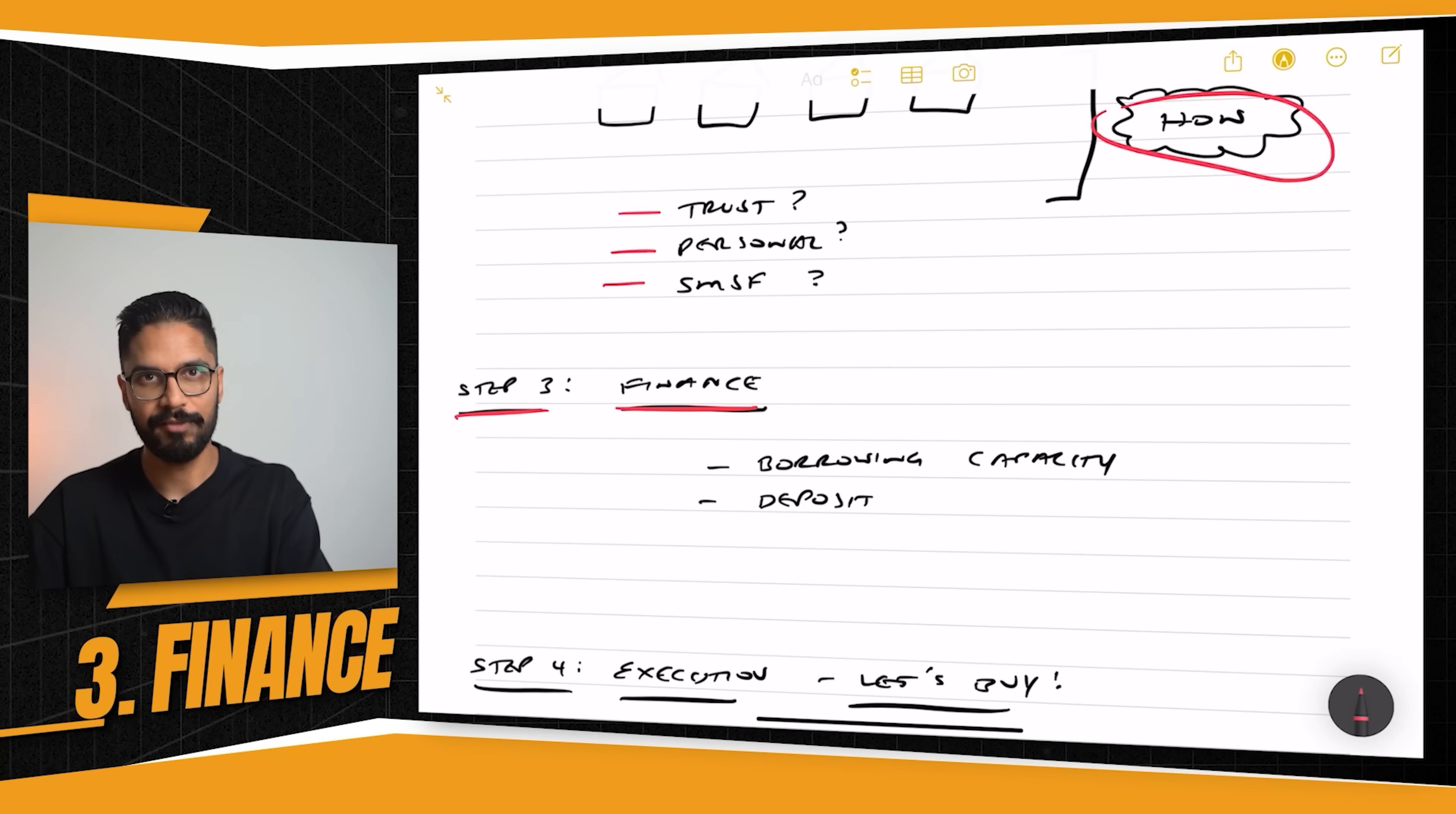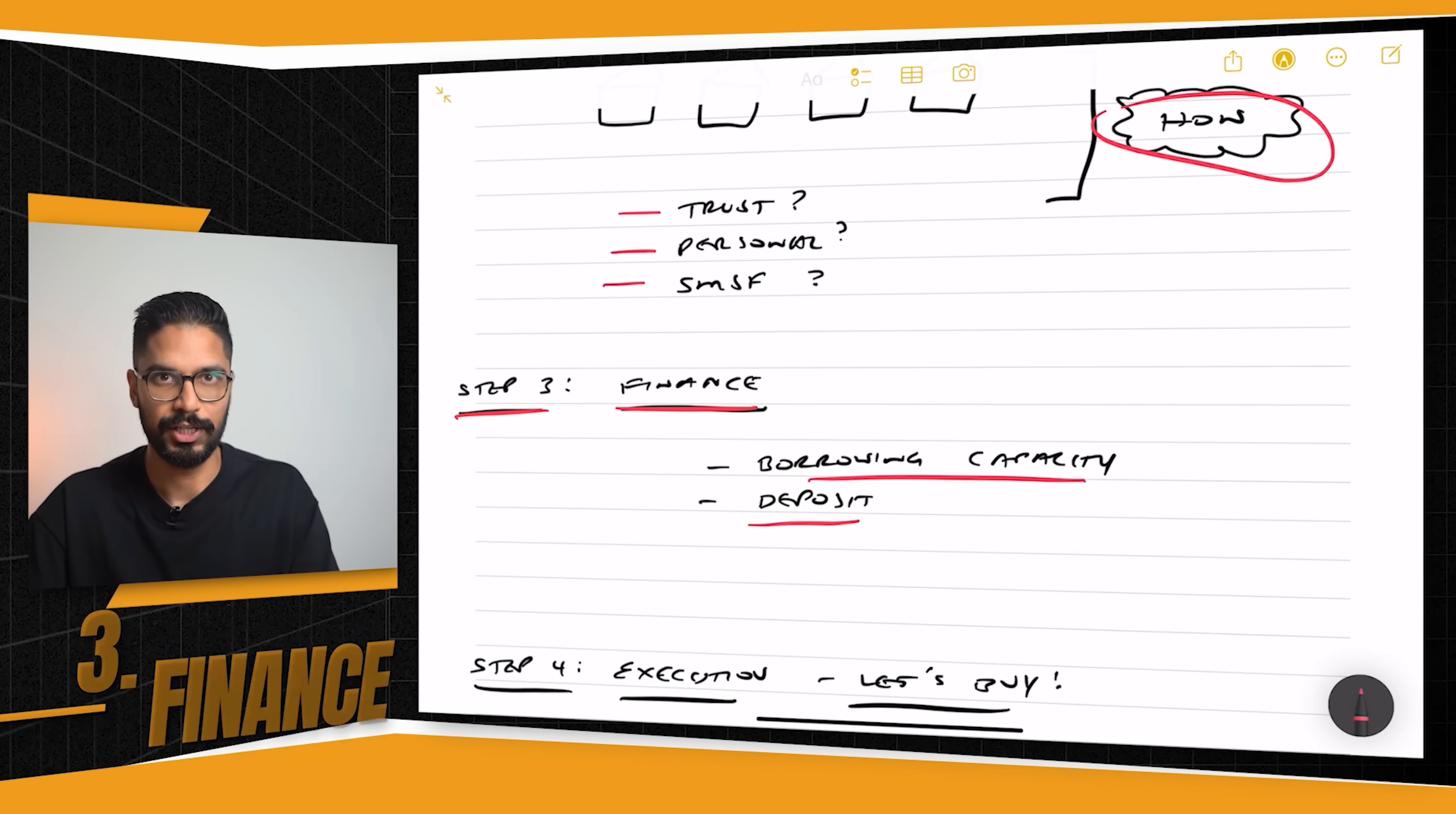So you need to know what your borrowing capacity actually is, and how much of a deposit you have currently versus what you actually need. Now, some of you may be in a fortunate position where you have your principal place of residence, and you've just held it for a couple of years, and it's grown in value. So you might actually have the equity already there, which could substitute as a deposit.